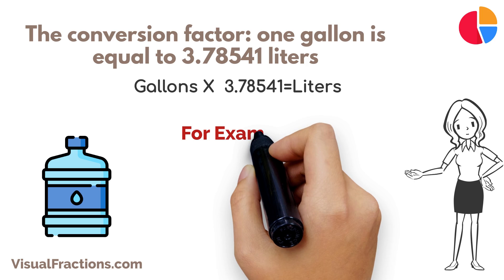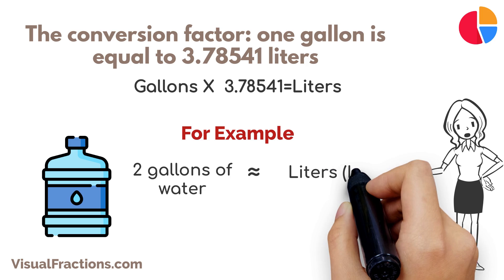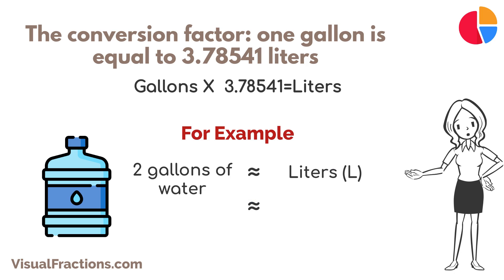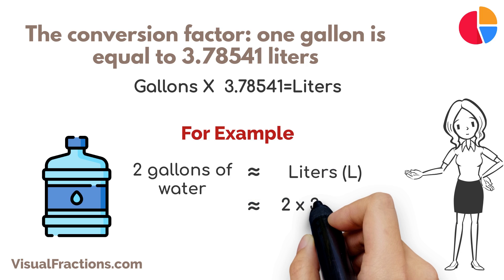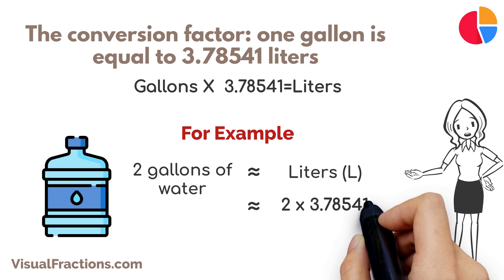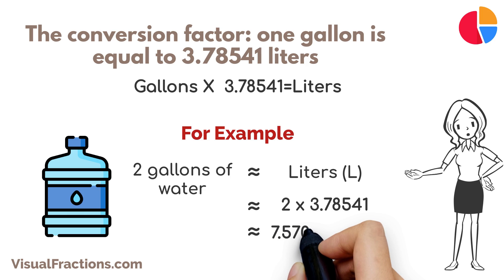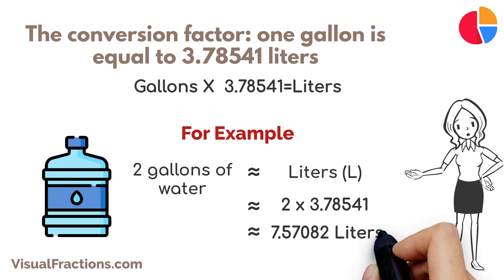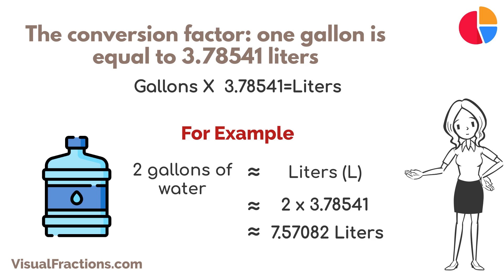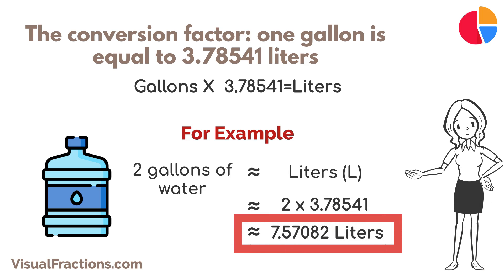Let's walk through an example. Say you have 2 gallons of water that you need to convert to liters. We start by multiplying 2 by the conversion factor of 3.78541. This gives us approximately 7.57082 liters. And that's it — we're done. 2 gallons of water is equal to approximately 7.57082 liters.